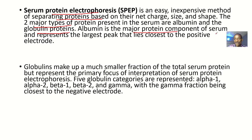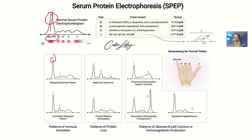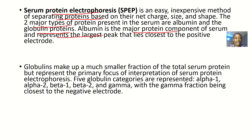Albumin is a major protein component of serum and it represents the largest peak that lies closest to the positive electrode. As you can see, albumin has the largest peak, meaning albumin is the greatest protein in serum. Globulins make up a much smaller fraction of total serum protein, but they represent the primary focus of interpretation of serum protein electrophoresis.